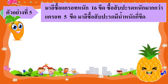ต่อมาเรามาดูตัวอย่างที่ 5 กันเลย มารีซื้อแครอทหนัก 16 ขีด ซื้อสับปะรดหนักมากกว่าแครอท 5 ขีด มารีซื้อสับปะรดมีน้ำหนักกี่ขีด ก่อนอื่นนะคะ คุณน้องจะพาเด็กๆไปวิเคราะห์โจทย์ปัญหากันก่อน